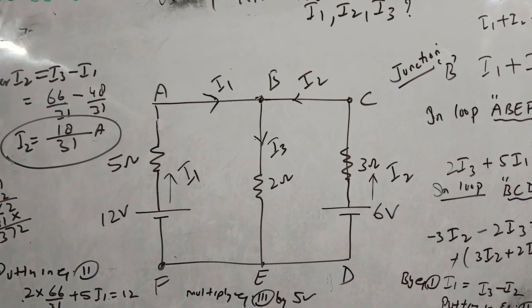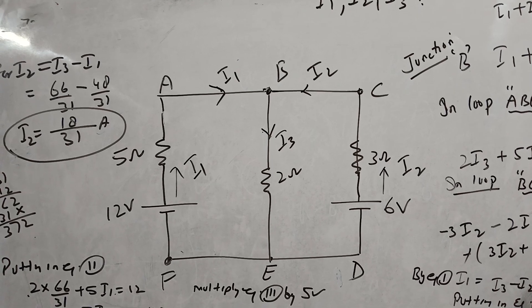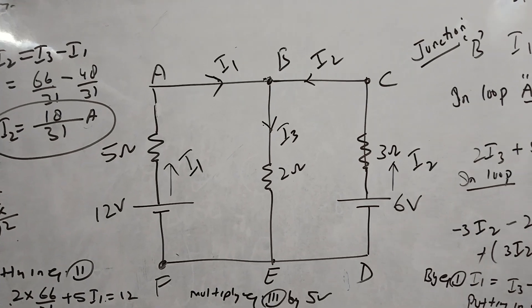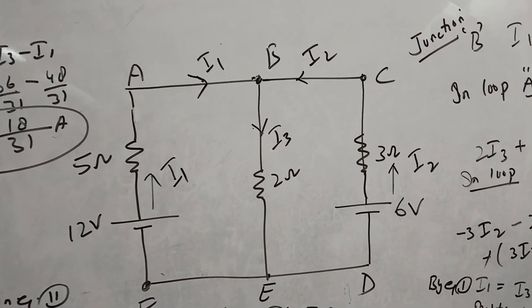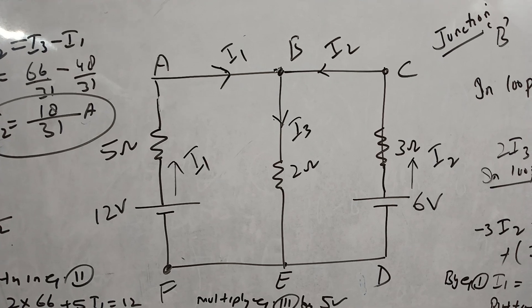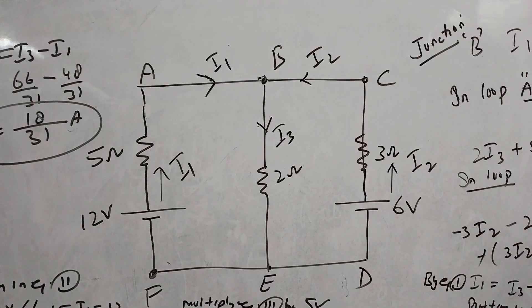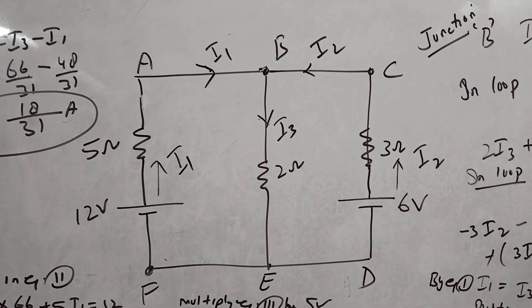As you can see in the circuit diagram, we are given three resistances: 5 ohms, 2 ohms, and 3 ohms, and there are cells of 12 volts and 6 volts. The direction of current is also mentioned.